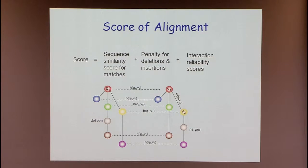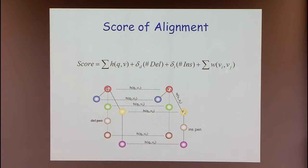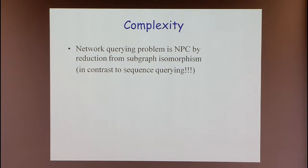The score should account for sequence similarity scores between nodes, reliability scores between edges, and penalize vertex deletions and insertions — very similar to how sequence alignment is handled. The score sums sequence similarities plus a penalty times the number of deletions, plus a penalty times insertions, plus interaction reliability weights. Even for isomorphic alignments this is subgraph isomorphism, an NP-hard problem, unlike sequence alignment, so naive algorithms take n-to-the-k time where k is the query size.